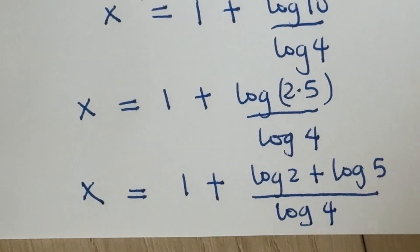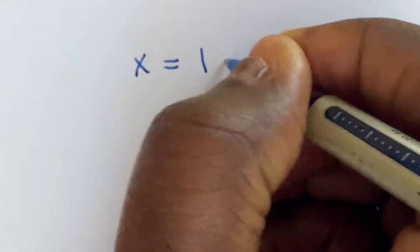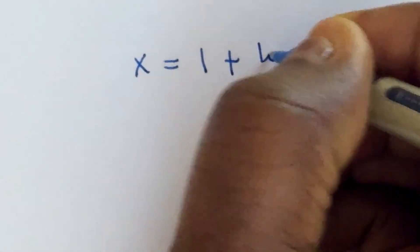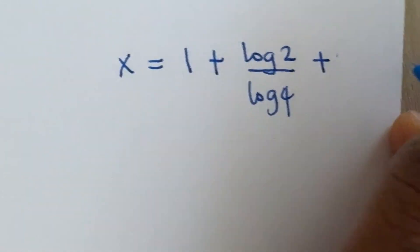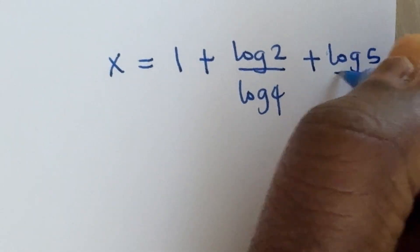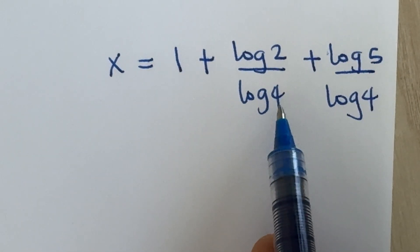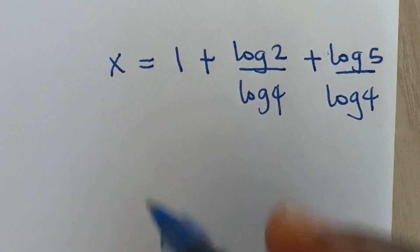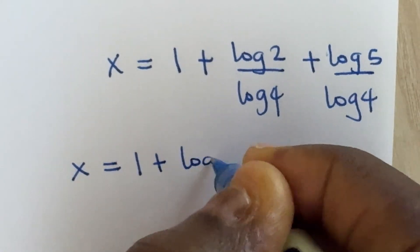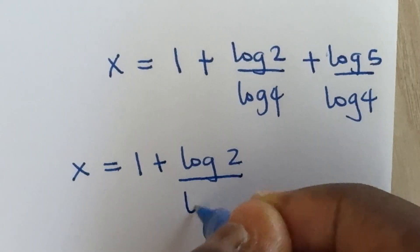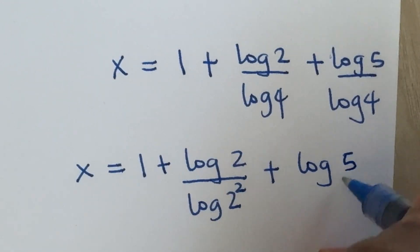And then we separate this division as well, so we have x is equal to 1 plus log 2 over log 4, plus log 5 over log 4. Looking at 4, I can express 4 as 2 raised to power 2, meaning x can also be expressed as 1 plus log 2 divided by log 2 squared, then plus log 5 divided by log 2 squared.